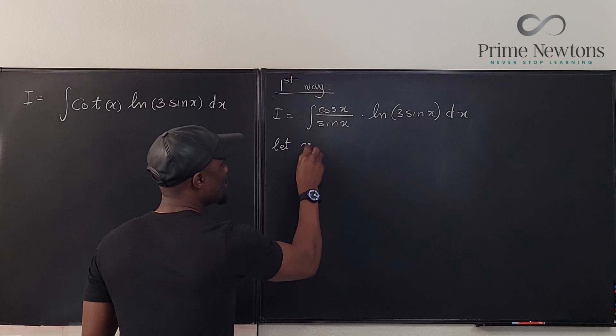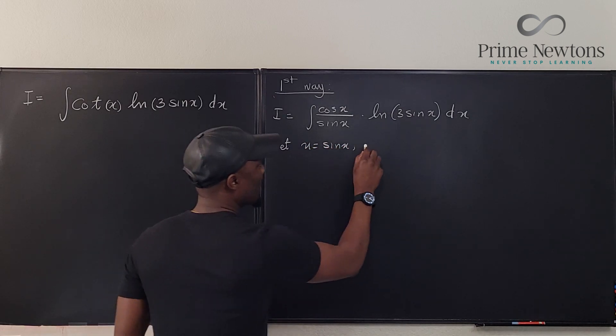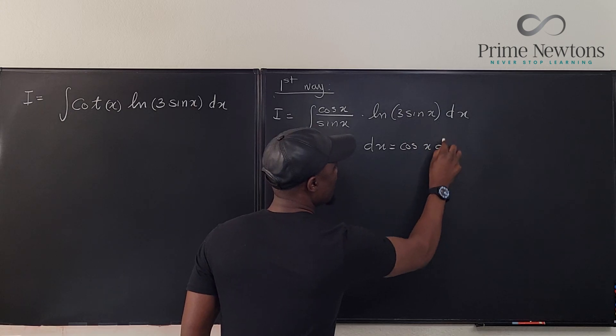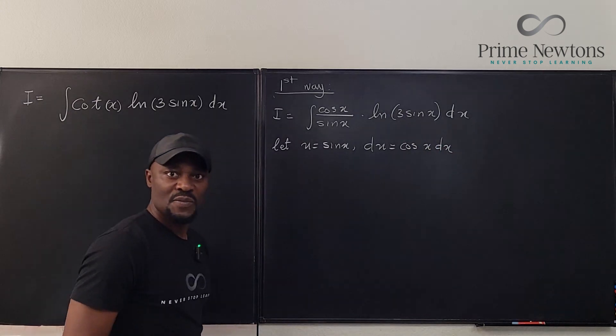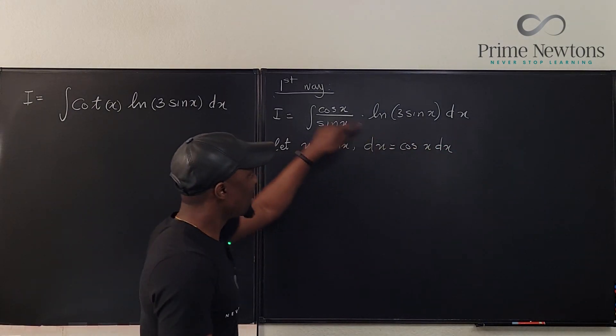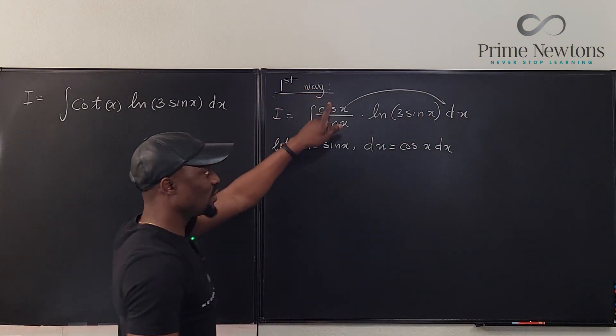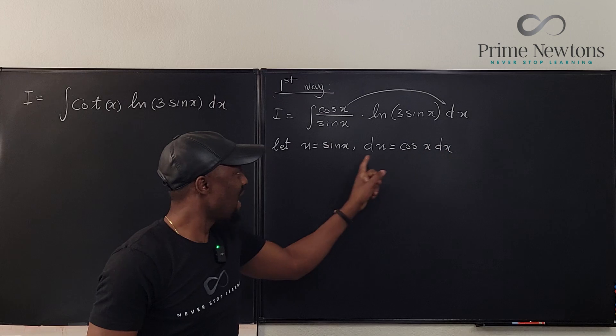So du will be equal to cosine x dx. Cosine x dx is already in this, so if we combine this and this we get cosine x dx, which is gonna become our du.